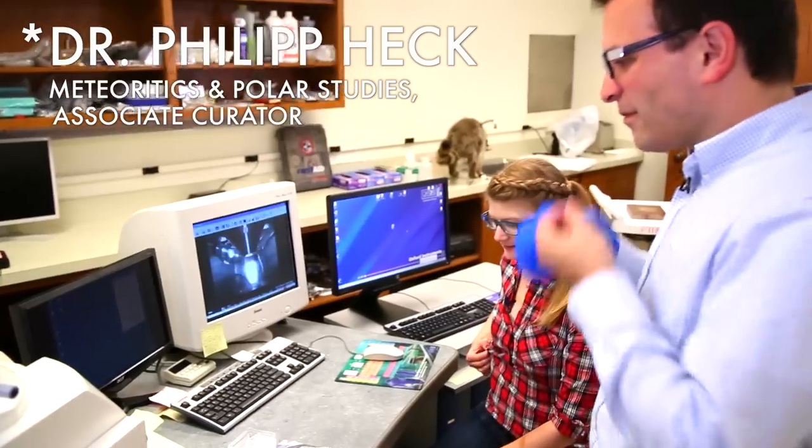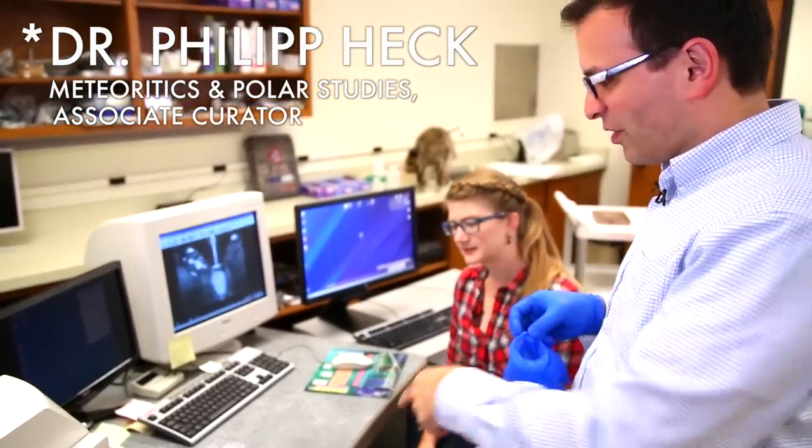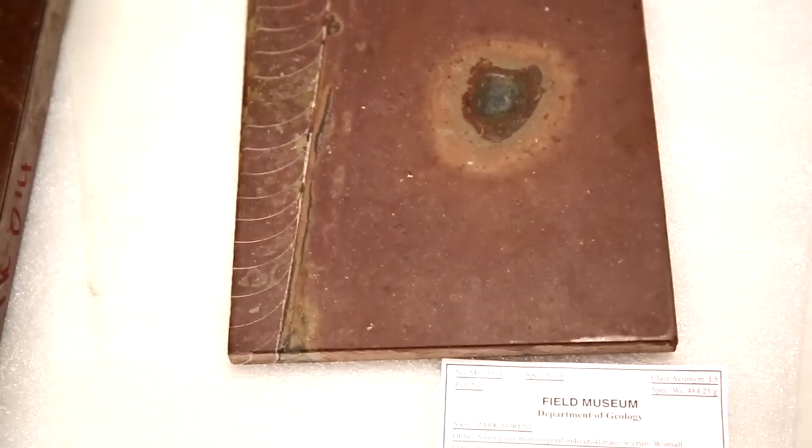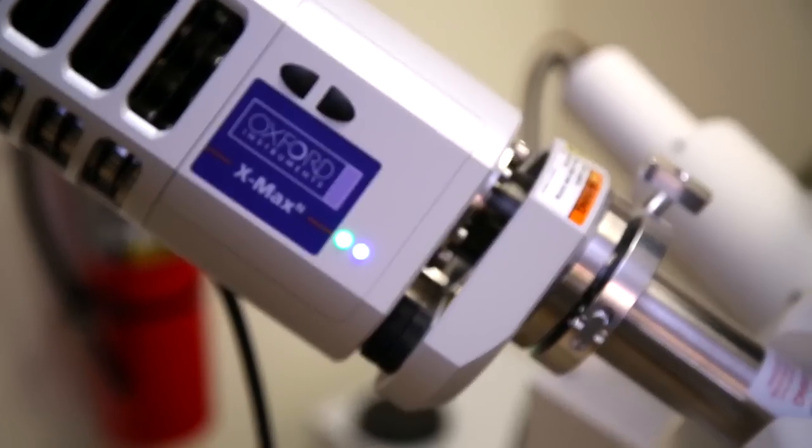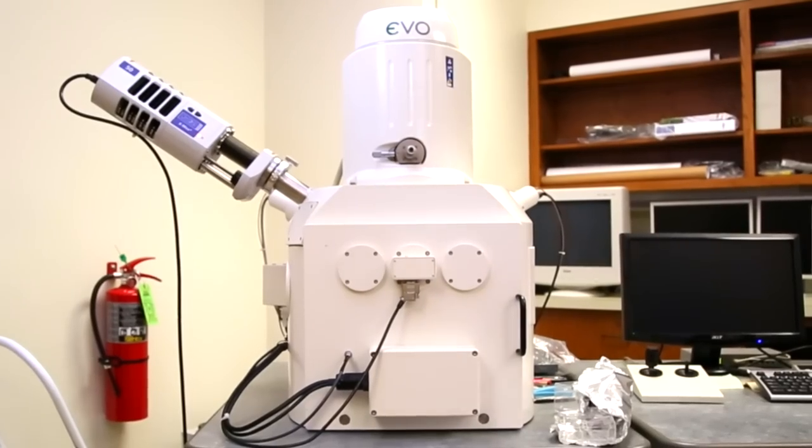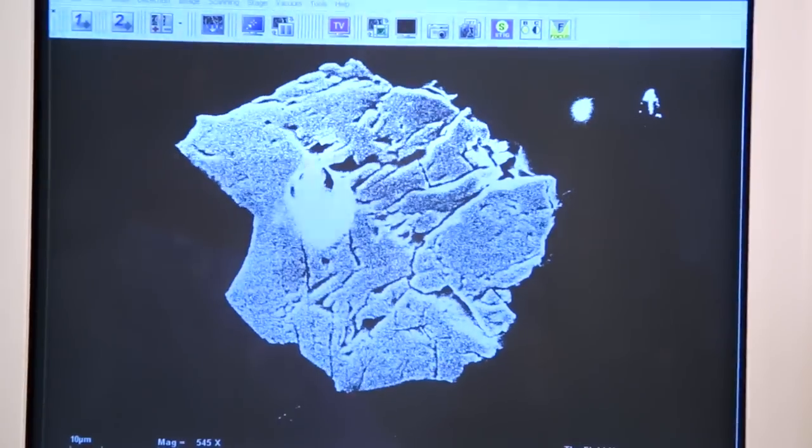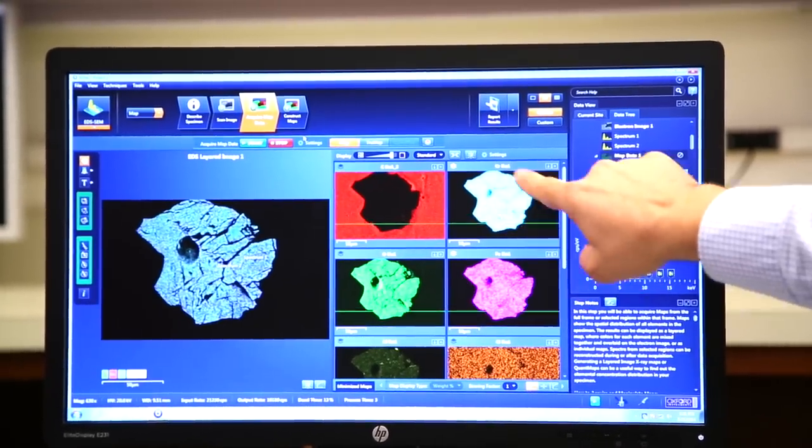Hey, I'm here with Philip Heck, who you guys will probably remember from the Star Stuff and Nanodiamonds episode. Today we're going to talk about this fossilized meteorite, but before then, what is this machine? Yeah, this is a scanning electron microscope. This allows us to get super high resolution images of any kinds of solid samples like meteorites, and also determine their chemical compositions.